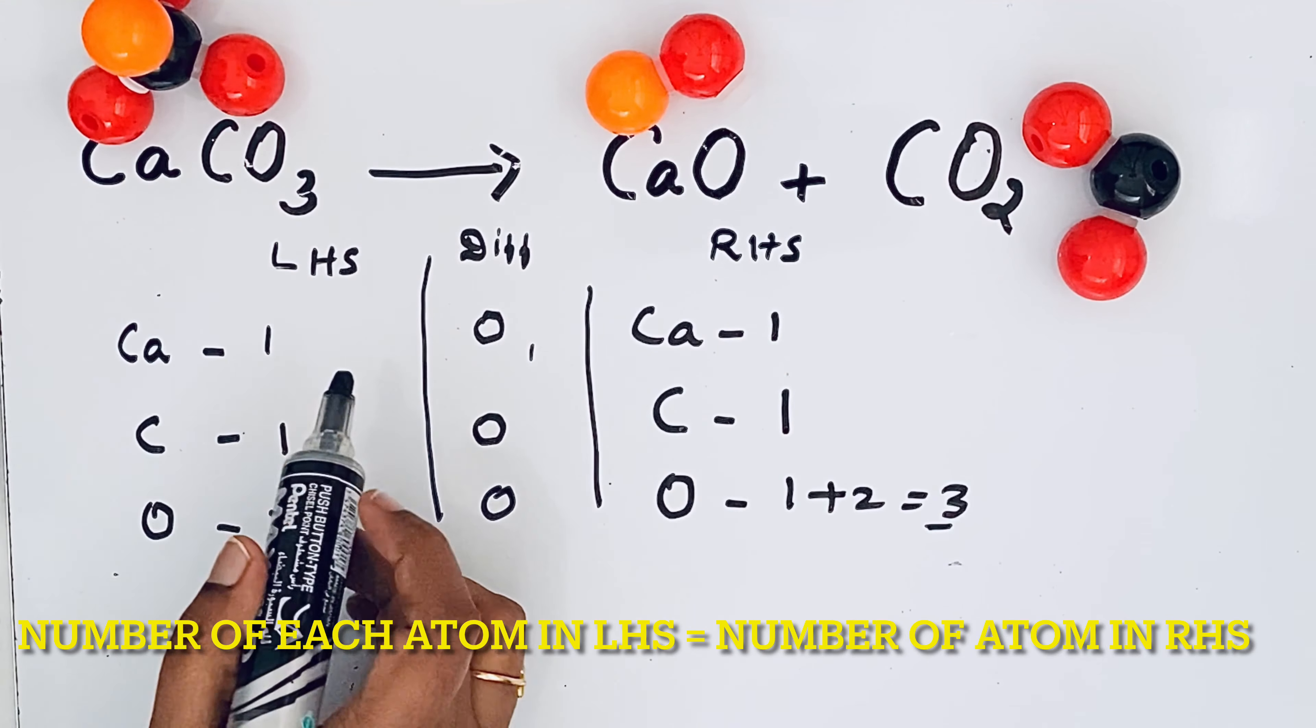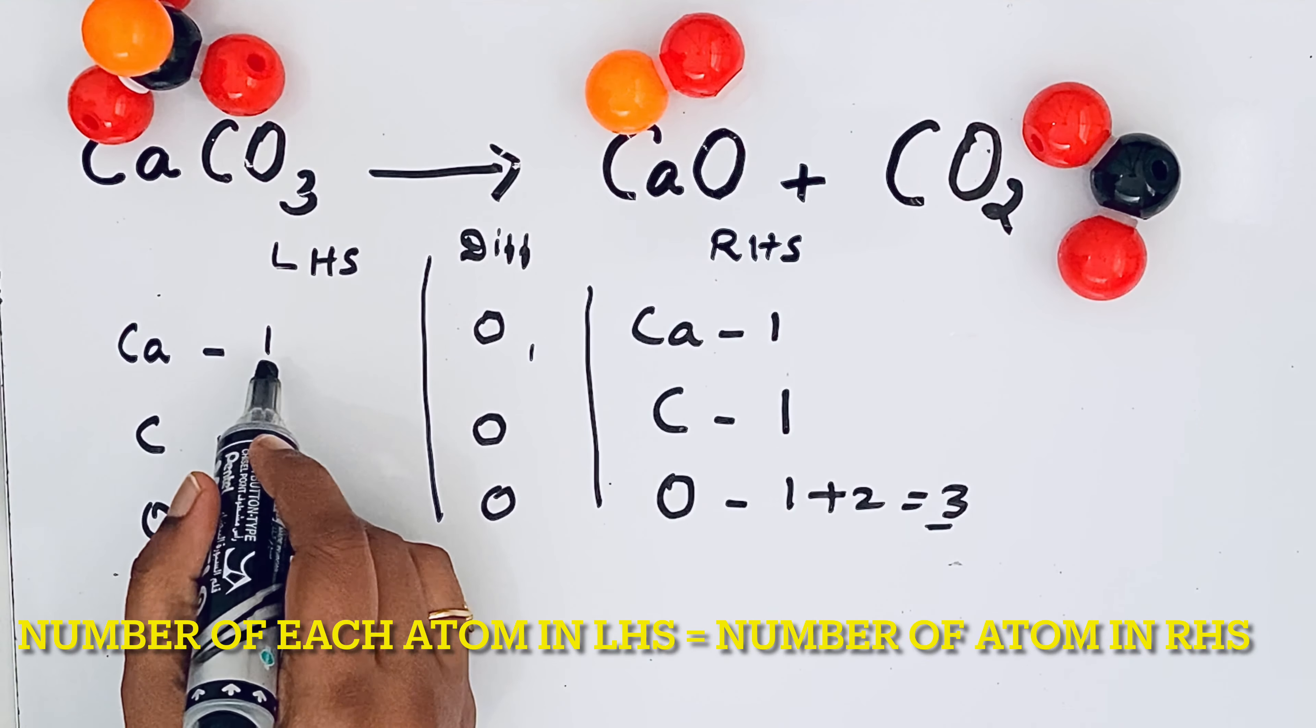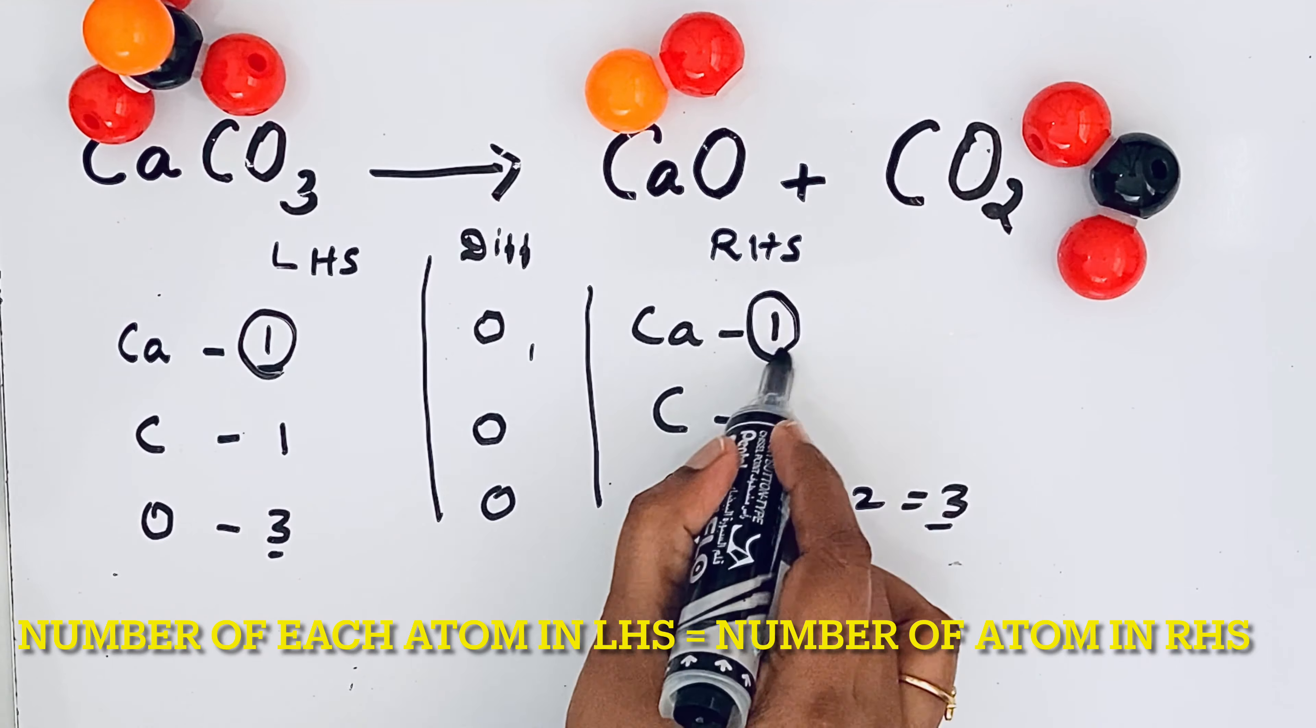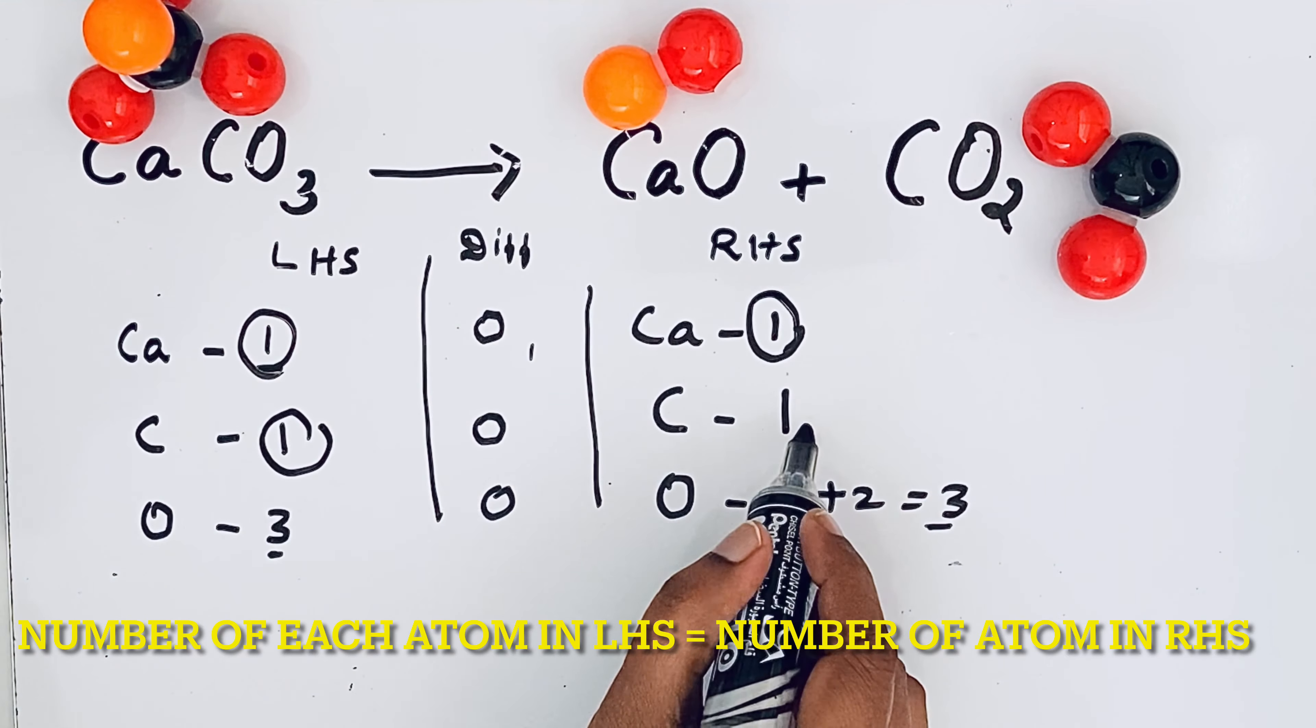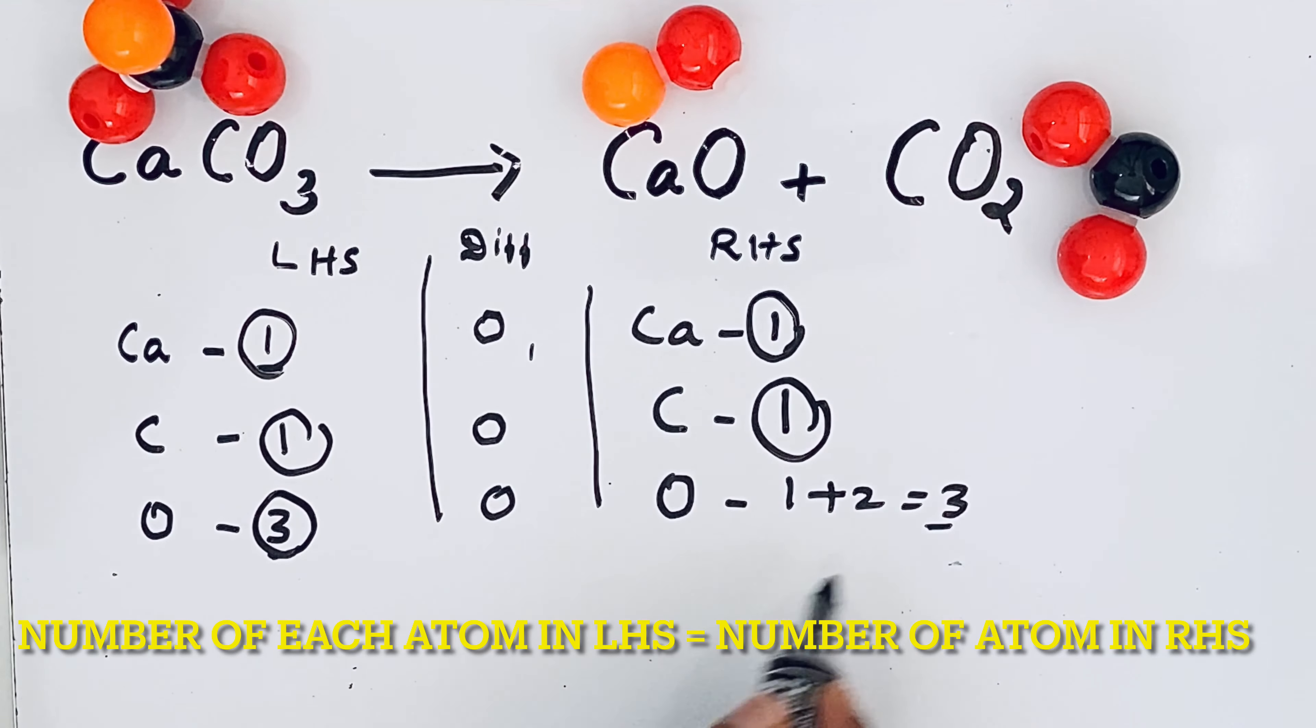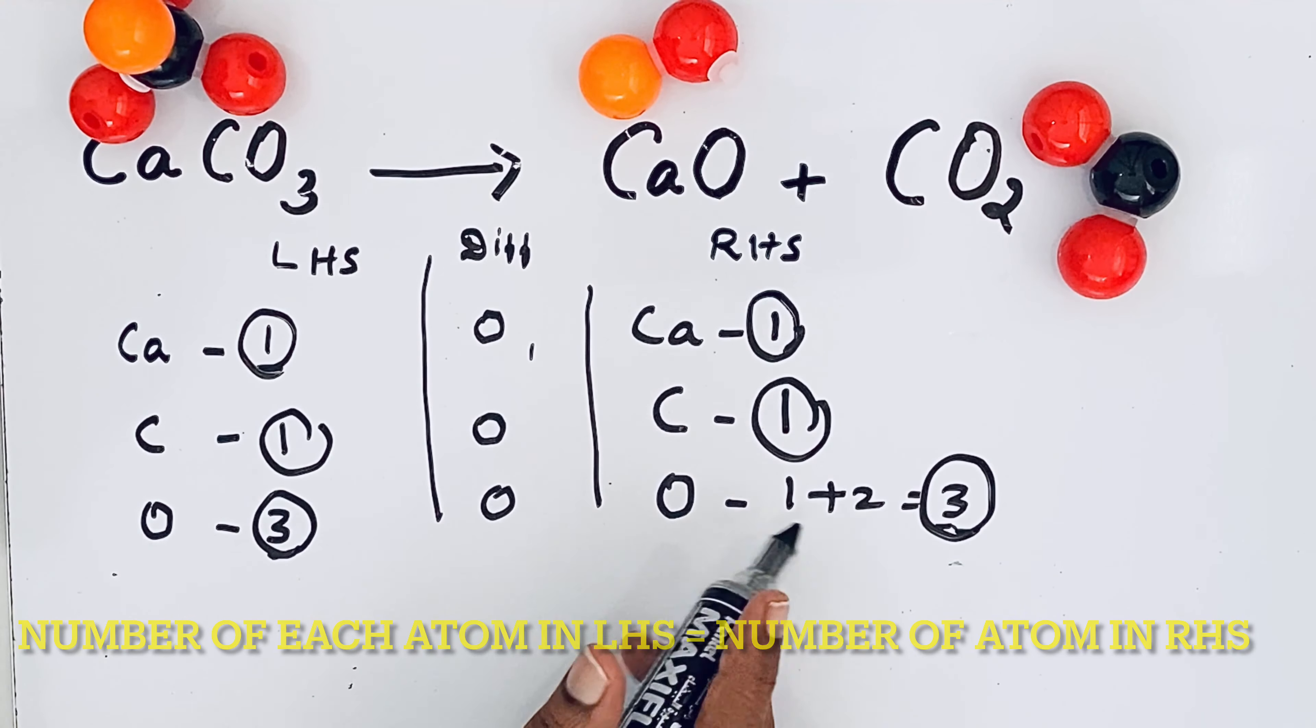So let us check the left hand side atoms with right hand side atoms. So calcium we have only one. Then here also right hand side we have one. Then carbon we have one. Right hand side also one. Oxygen three. Here also three. So it is completely balanced.